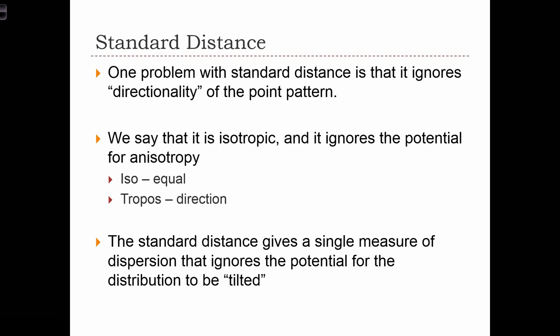One problem with the standard distance is that it tends to ignore directionality of dispersion of the point pattern. We say that the standard distance statistic is isotropic. It ignores the potential for anisotropy.